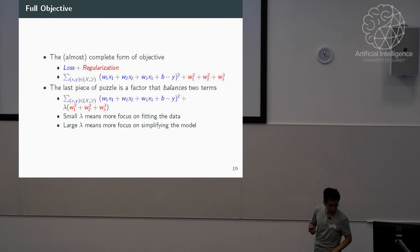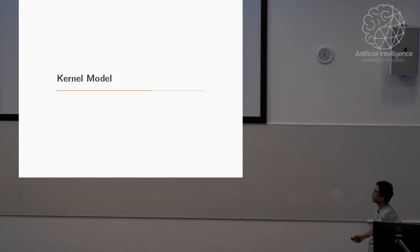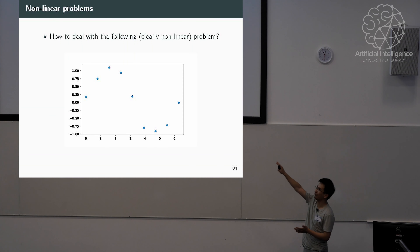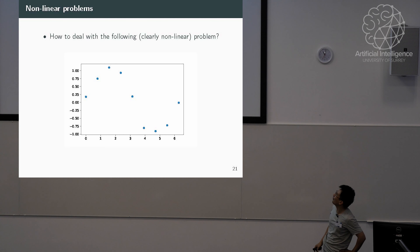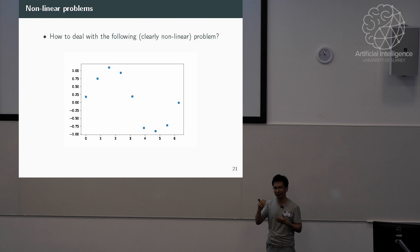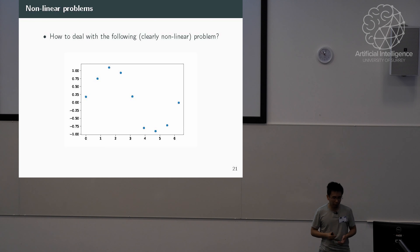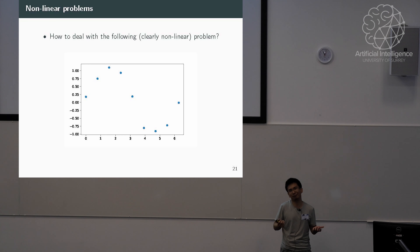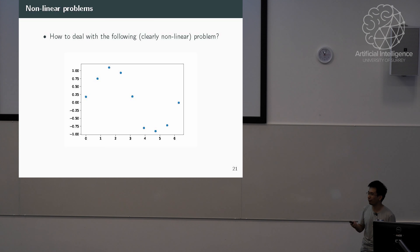Now let's look at the kernel model. Consider a curve fitting problem that cannot be fit by a linear model — it looks like a sine function. In 2D you can visually check and decide not to use a linear model. However, in high-dimensional feature space, there's no easy way to visualize this. When your linear model doesn't work after considerable effort, that's when you consider switching to the kernel model family.